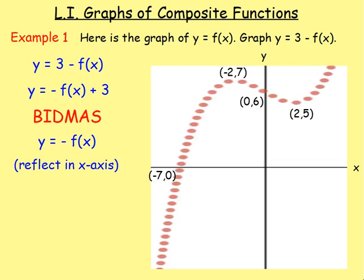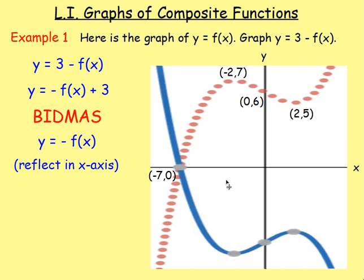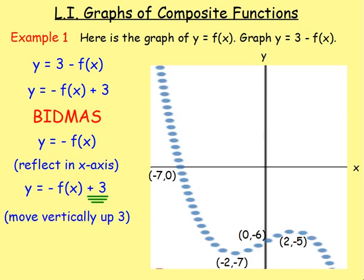So reflecting it in the x-axis, let us change that to a dotted line. Reflecting it in x, you will end up with something like that. Your x-axis will become a line of symmetry. Try and be as accurate as you can when you are sketching this. Each of the points then will be reflected over. Remember, it is the x value that stays the same. And the y value will change. The y value will become a negative. Or if it's already negative, it will become positive. So negative 7, 0 will stay as negative 7, 0. This point at negative 2, 7 will be negative 2, negative 7. The point 0, 6 will be 0, negative 6. And the point 2, 5 will be 2, negative 5. You are changing the y value when you are reflecting it over. So you'd end up with something like that.